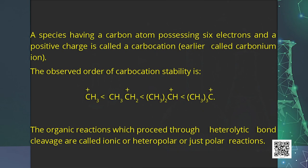Carbocations are highly unstable and reactive species with a trigonal planar shape, with the positively charged carbon atom being sp2 hybridized. Heterolytic cleavage can also give a species in which carbon gets the shared electron pair — a carbanion. For example, in methyl lithium, a methyl anion and lithium cation are formed. Carbanions are also unstable and reactive. Reactions proceeding through heterolytic bond cleavage are called ionic or polar reactions.